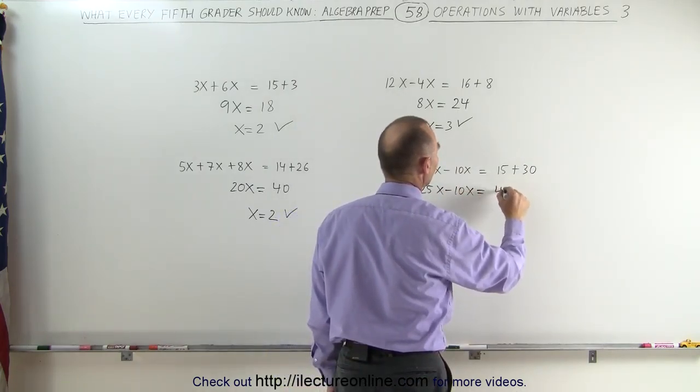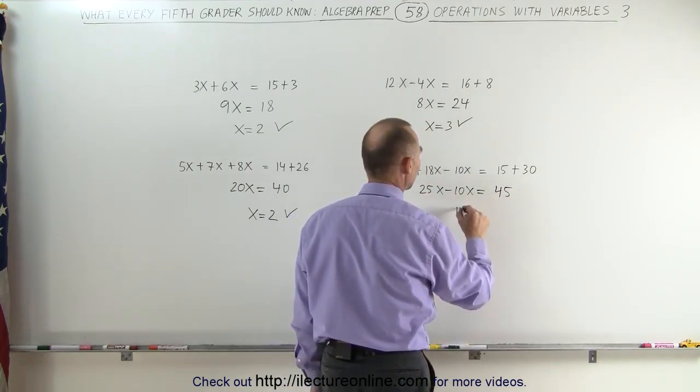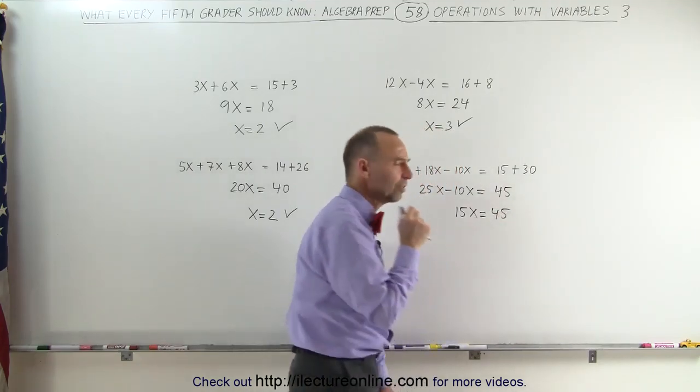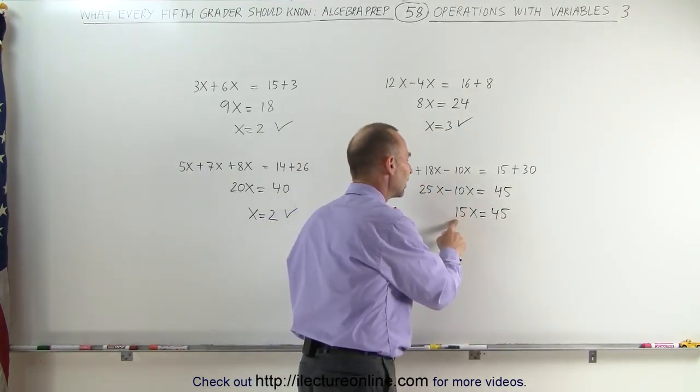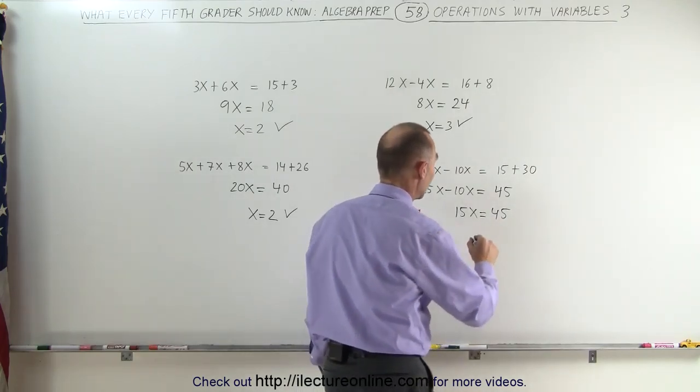And here on the last problem, on the left side, we have 7x plus 18x, that's 25x minus 10x. And 25x minus 10x is 15x, so that must then equal 15 plus 30, which is 45.